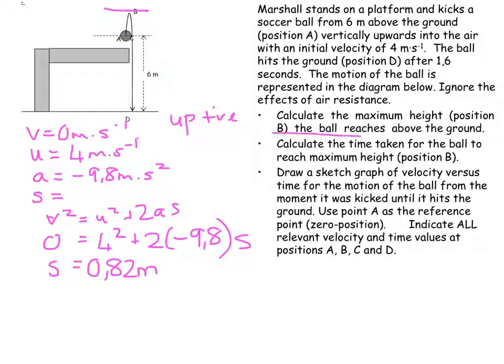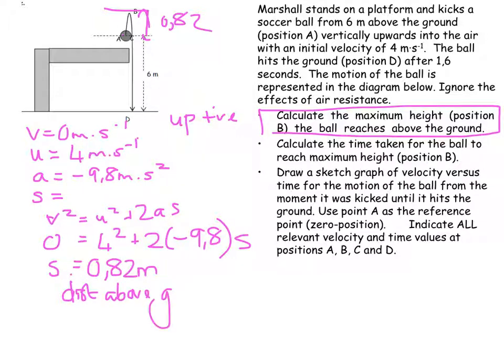But that wasn't the question. How far above the ground was it? Well, it's 6 plus the 0.82. And therefore, the distance above ground is equal to 6.82 meters.